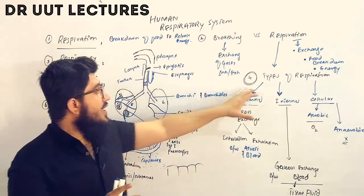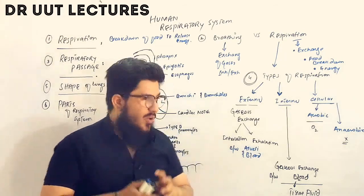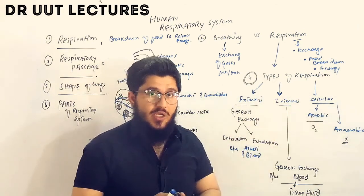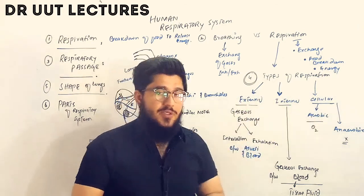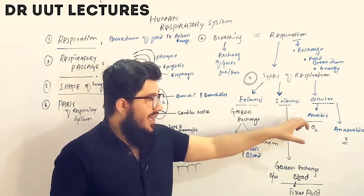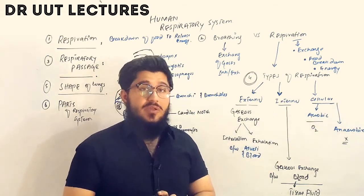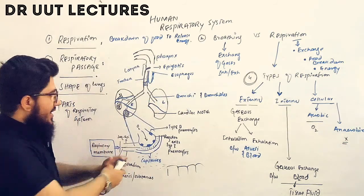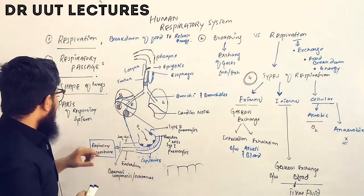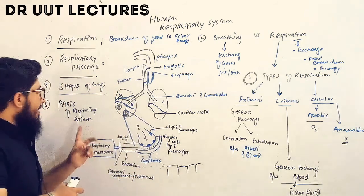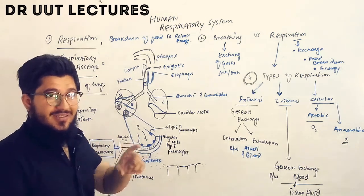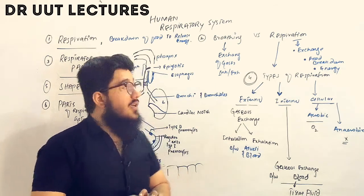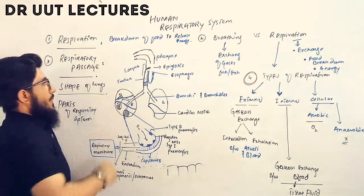In the fourth point, we will talk about the types of respiration: external, internal, and cellular respiration. In cellular respiration, we'll discuss aerobic and anaerobic respiration. In the fifth point, we'll discuss the shape of the lungs, and in the sixth point, the parts of the respiratory system. Now let's start from the first point — respiration.